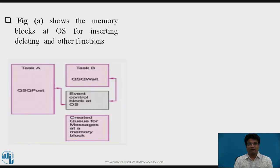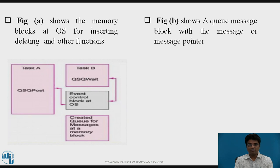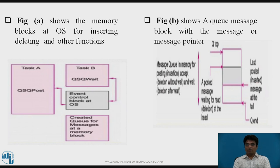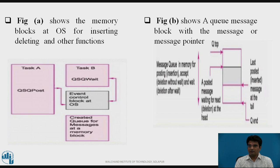As shown in the figure, there are two tasks: Task A and Task B. Task A uses OSQ_Post and Task B uses OSQ_Pend, so these are interlinked — Task A sends the message through OSQ_Post and Task B handles the event control block at the OS. Figure A shows the memory blocks at OS for inserting, deleting, and other functions. Figure B shows the queue message block with Q_Top and Q_End pointers with three blocks used for messaging. A posted message waits for read — that is, deletion — at the head, while the last posted message is at the tail.